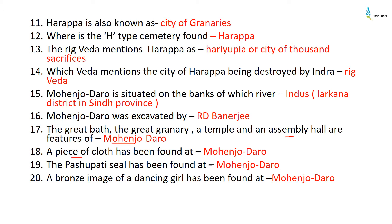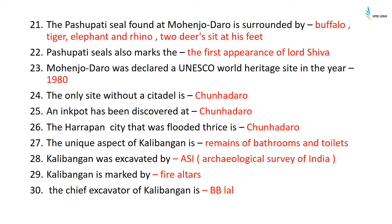A piece of cloth, the Pashupati seal, and the bronze image of a dancing girl have also been found at Mohenjo-daro. The Pashupati seal found at Mohenjo-daro is surrounded by a buffalo, tiger, elephant, and a rhino, with two deer sitting at his feet. The Pashupati seal also marks the first appearance of Lord Shiva.